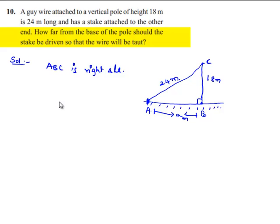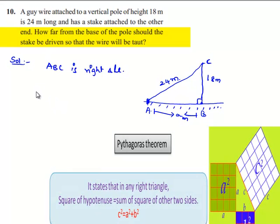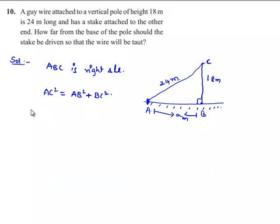Then from Pythagoras theorem we can say that in a right angle triangle, hypotenuse square, which is AC square, is equal to the sum of squares of the other two sides, that is AB square plus BC square.